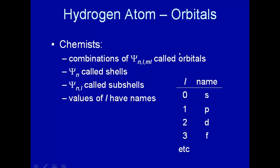Orbitals are used in several different ways — at least three. Depending on context, when a chemist talks about orbitals they may mean one of three things: the wave function from the Schrödinger equation; the square of the wave function, i.e., probability density; or a shape in which a constant probability contour is drawn, giving a certain probability of finding the electron within a particular volume. So orbitals are not precisely defined in chemistry, but generally they're associated with one way or another of plotting wave functions.